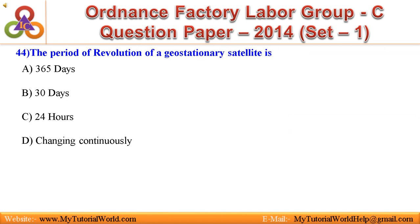44. The period of revolution of a geostationary satellite is: A. 365 days, B. 30 days, C. 24 hours, D. Changing continuously. Answer is 24 hours.